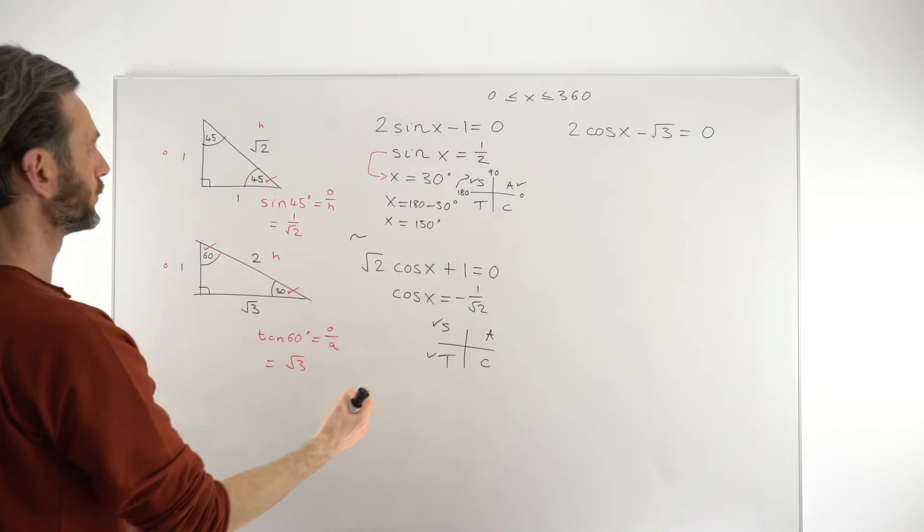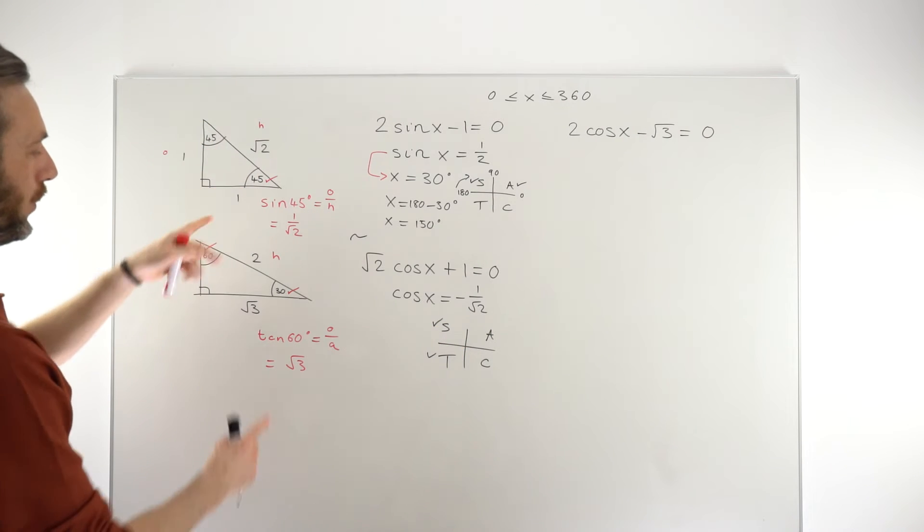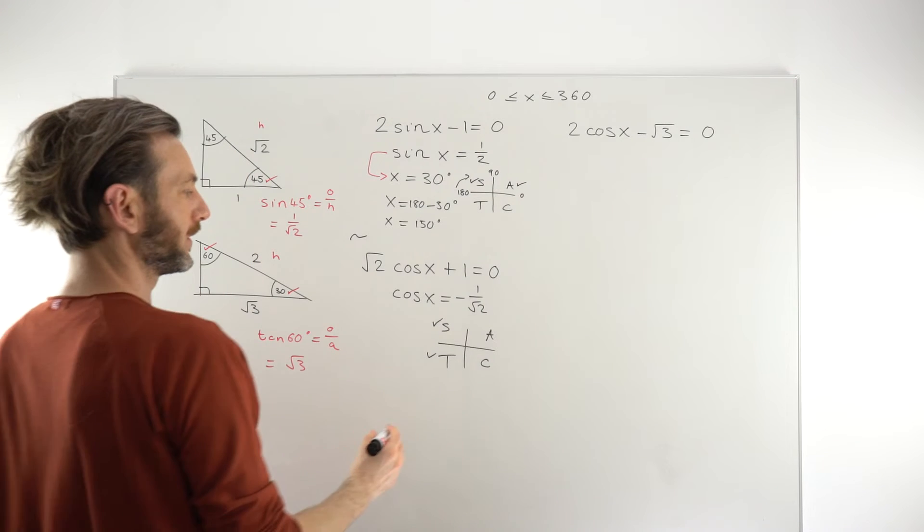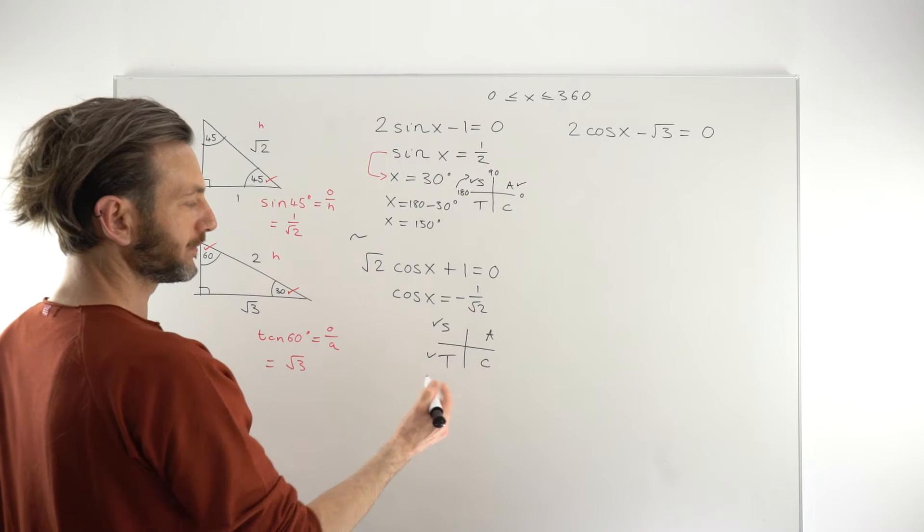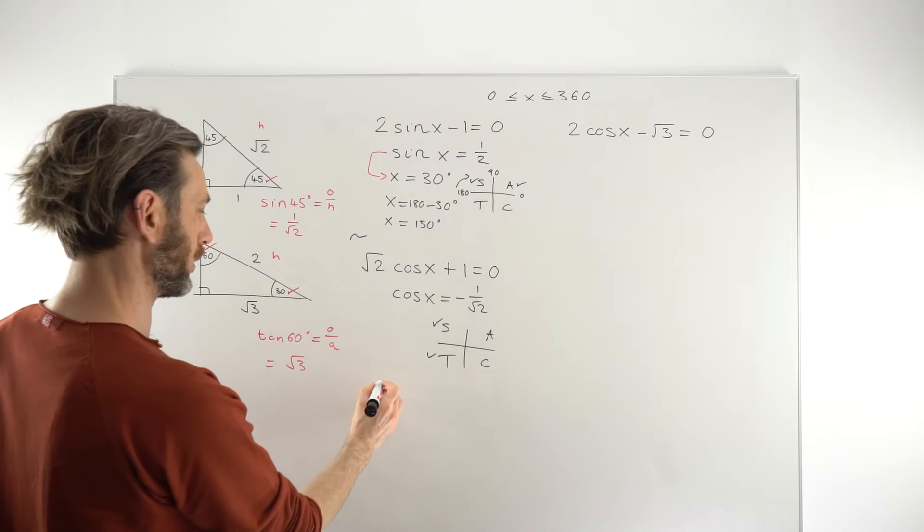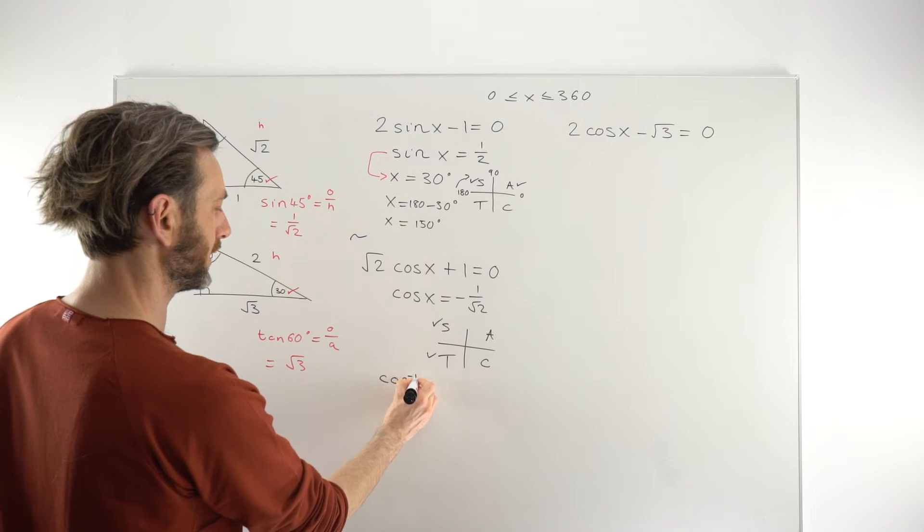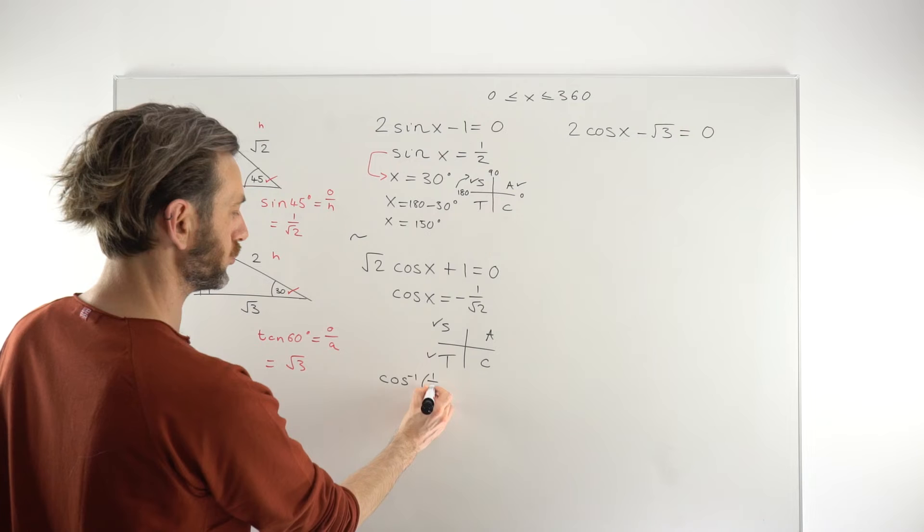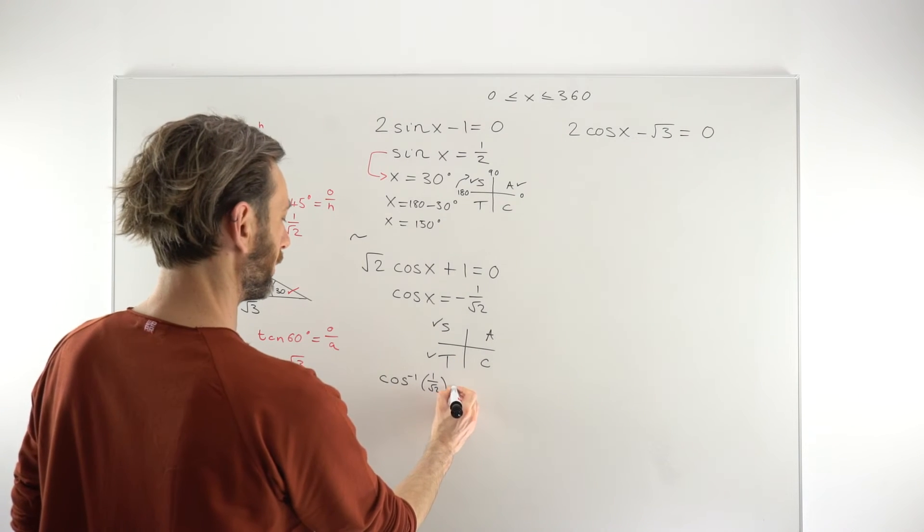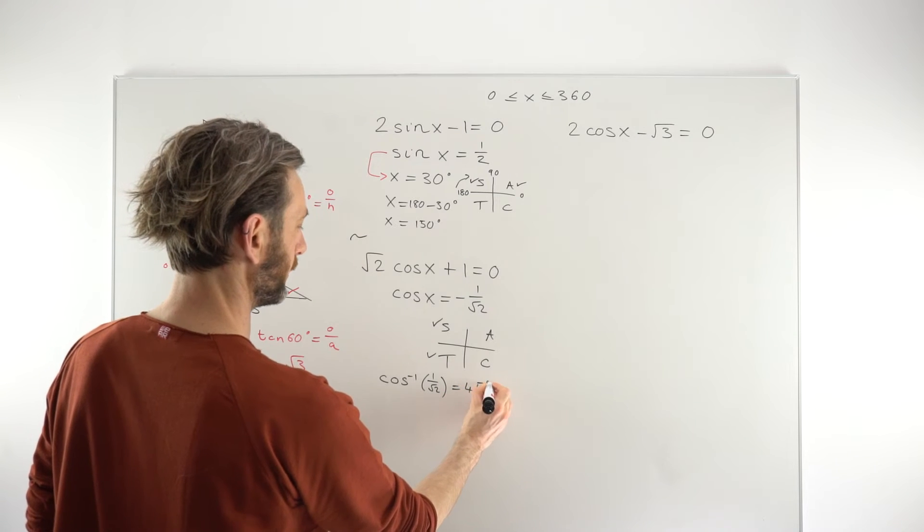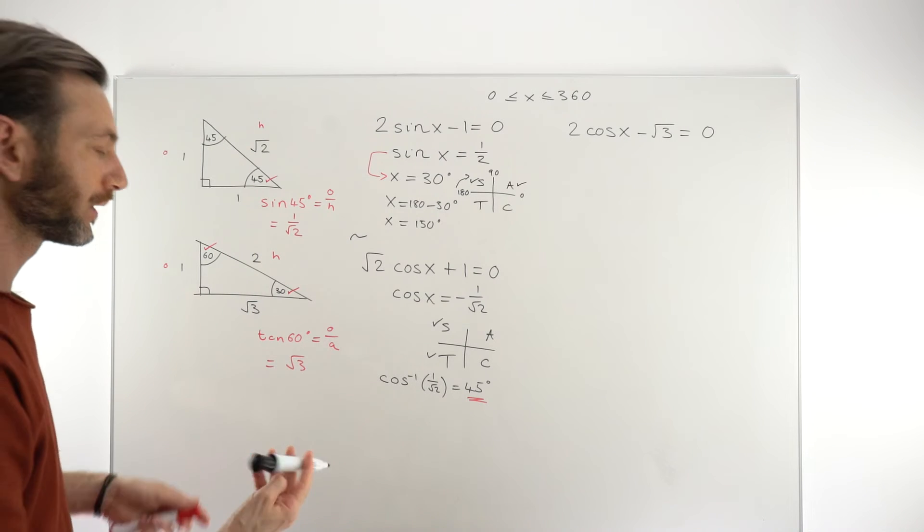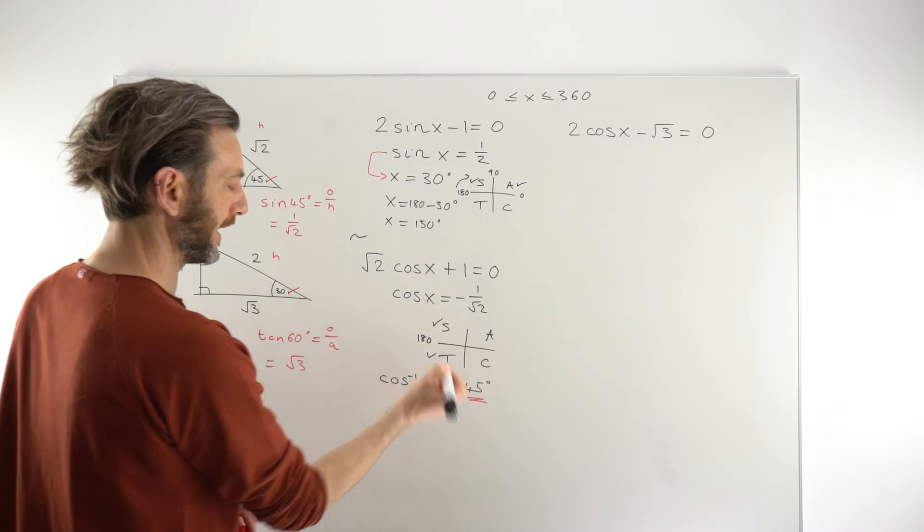Cosine is adjacent over hypotenuse. In the case of this triangle, because it's symmetrical, unlike this one, it doesn't matter which angle you choose. They're both 45. So, that tells us that the solution there would be 45. 45, though, is in this first quadrant. So, what that tells us is that it's not a final solution. What we've just really figured out there is that if you did inverse cosine of 1 over root 2, as you would do on a calculator, we're basically figuring out there that that would be 45 degrees. But, in this case, that's not a final solution. That's just like a reference angle.